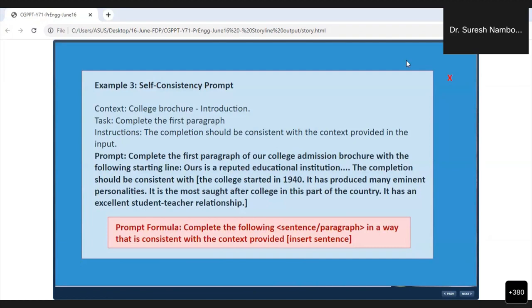give the details separately. We can tell ChatGPT to complete the paragraph consistent with the data given. For example: 'Complete the first paragraph of our college admission brochure with the following starting line: Ours is a reputed educational institution... The completion should be consistent with: the college was started in 1940, it has